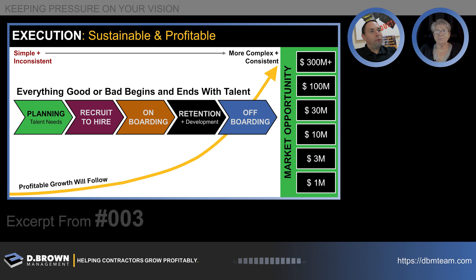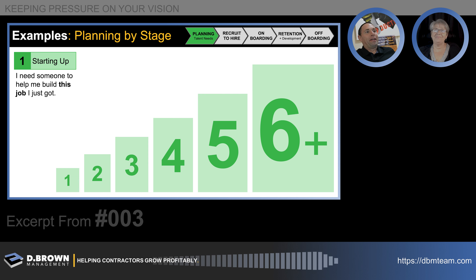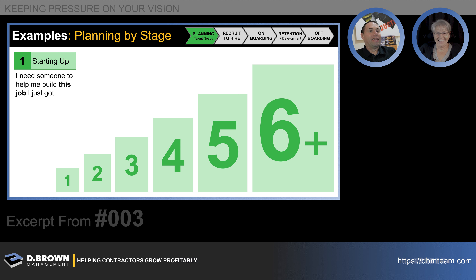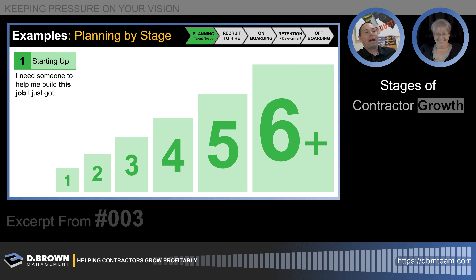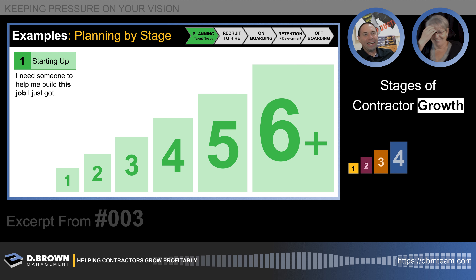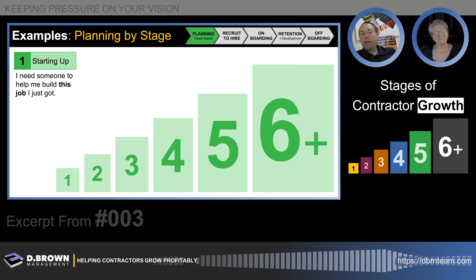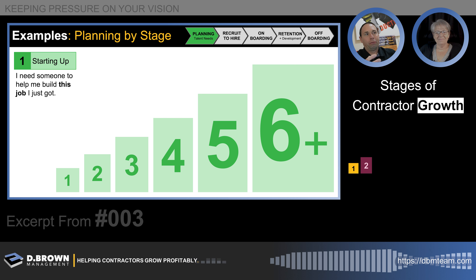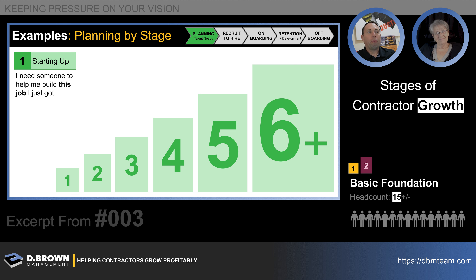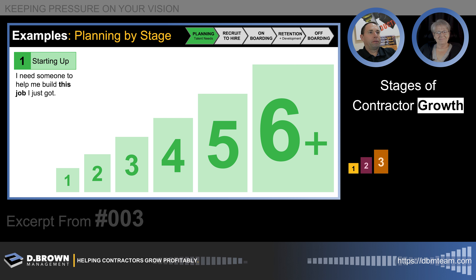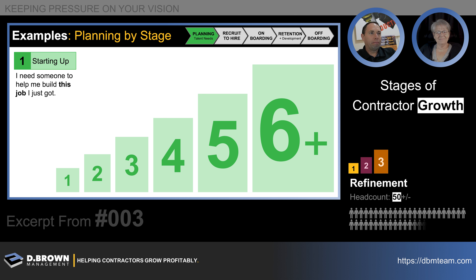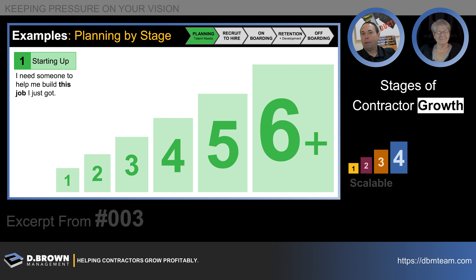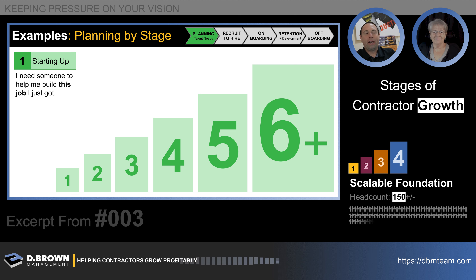Planning example: at stage one you're just starting up. You'd say 'I need someone to help me build this job I just got' — and you know a person, your cousin, a guy who knows a guy. That's exactly where you should be at that point. You started the business because you knew how to build, you had a customer willing to pay you, and you knew a few people you'd worked with before. That is your talent value stream at that point, and that is your planning.